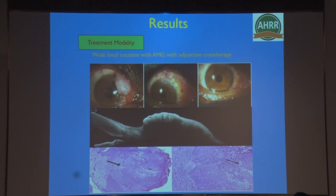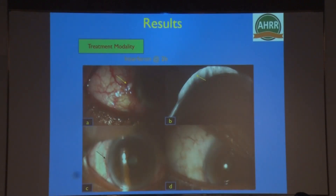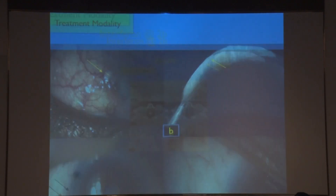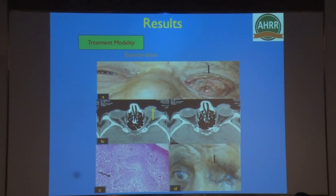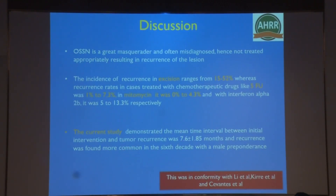This is a clinical photograph of a patient who underwent excision with complete recovery. This is a photograph of a patient in whom interferon was started, showing complete regression of the tumor. And this is a case which had orbital spread at the time of presentation for which exenteration was performed.